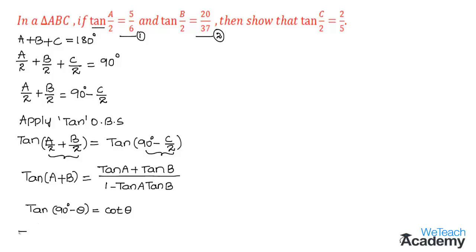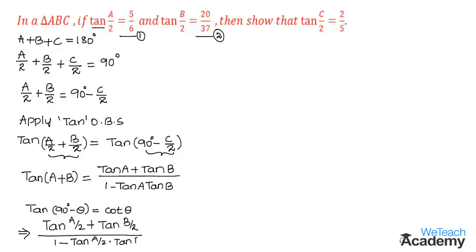Substituting, we get: [tan(A/2) plus tan(B/2)] divided by [1 minus tan(A/2) times tan(B/2)], which equals tan(90° minus C/2), which is cot(C/2). So on the right-hand side we have cot(C/2).